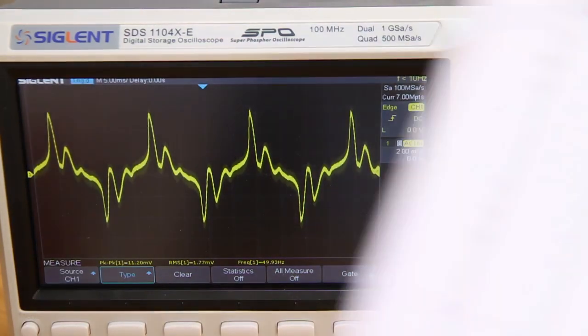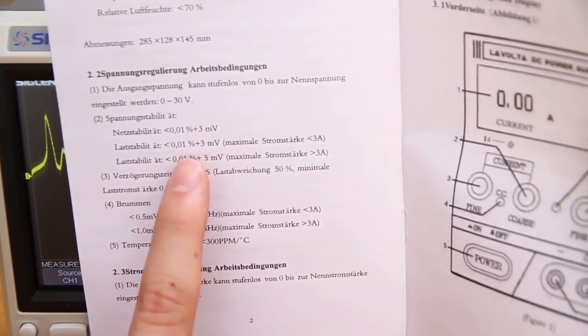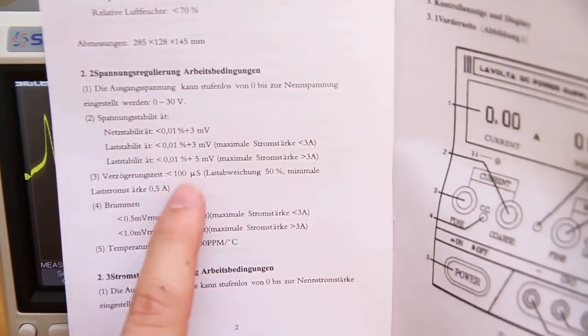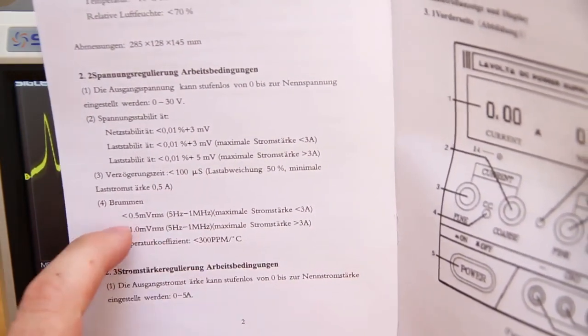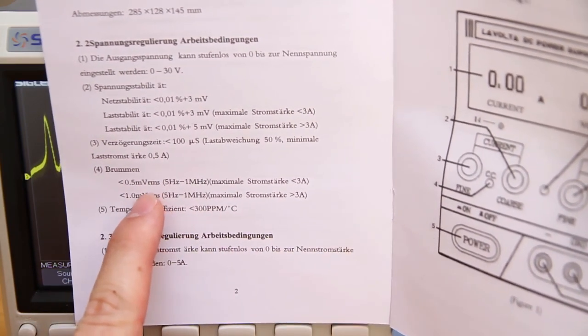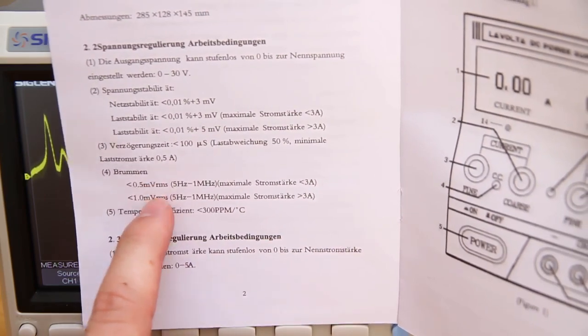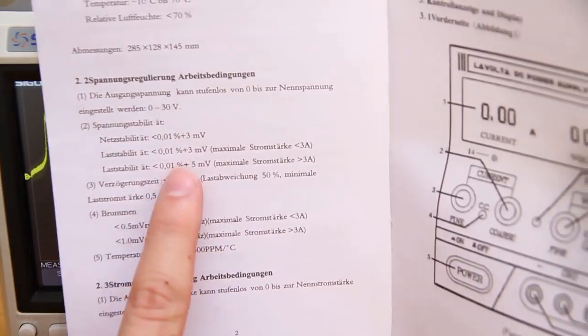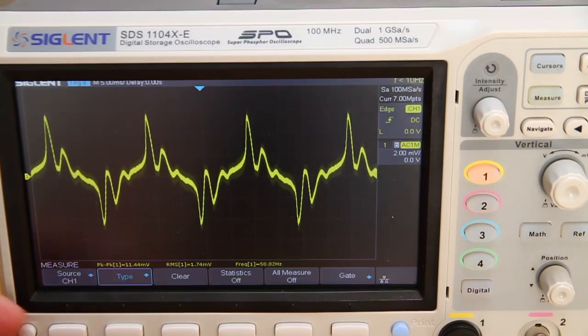So what are the specs, you ask? Like 0.01% plus 3 millivolts. Of course, 0.01% at 30 volts is 3 millivolts. So they are saying like 3 millivolts across the range for currents below 3 amps. For mains rejection, they say 0.5 millivolts below 3 amps. So they are not meeting that spec, but it's not complete bullshit. They are saying below 3 millivolts and we're seeing 1.7 millivolts, so that's below 3 millivolts. The previous generation isn't that noisy. So that's great.